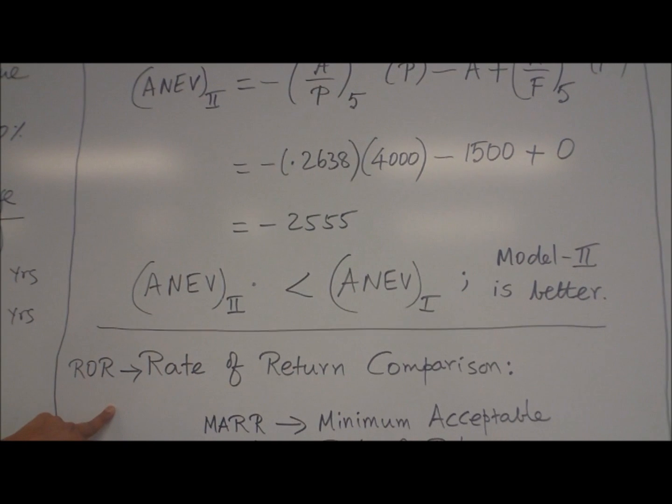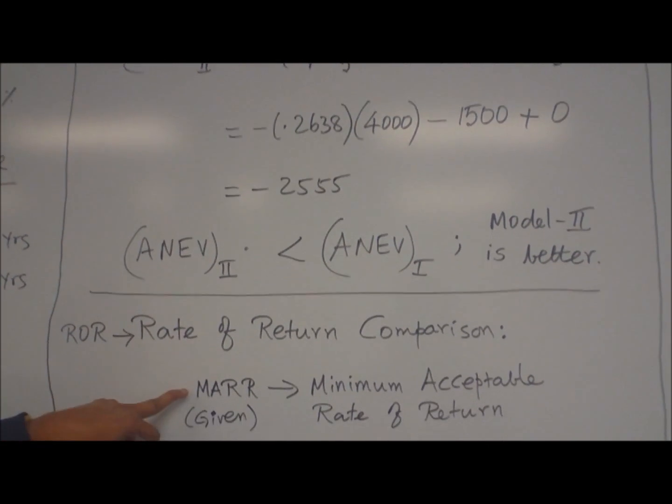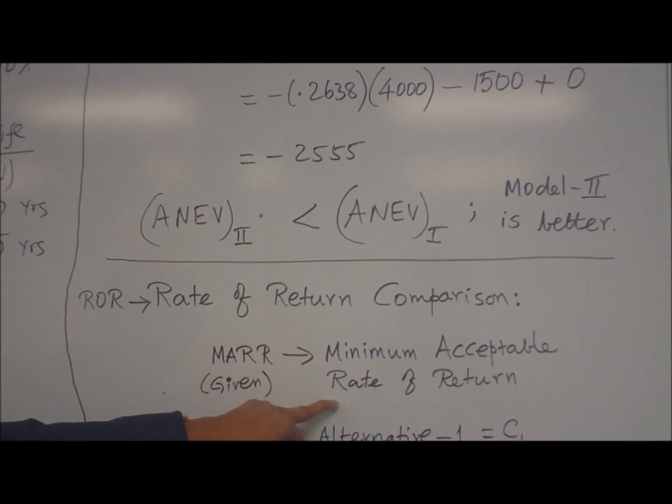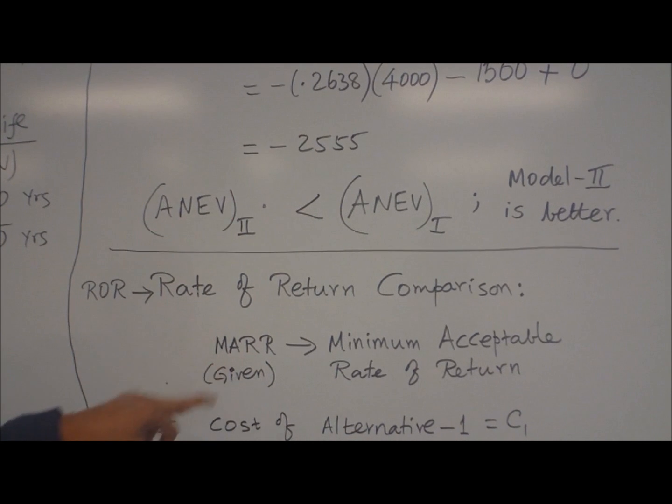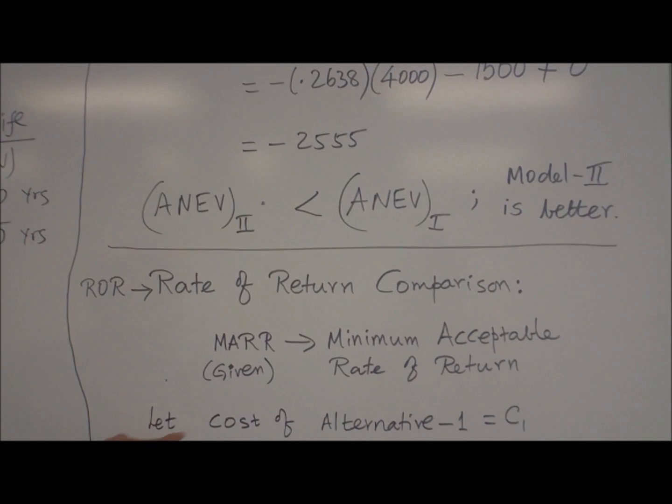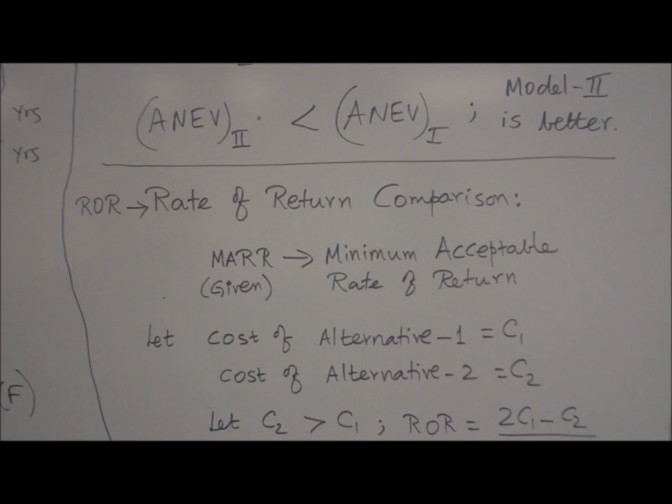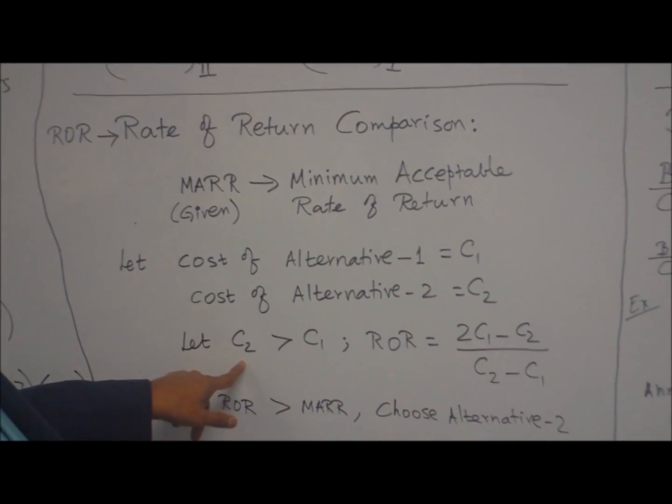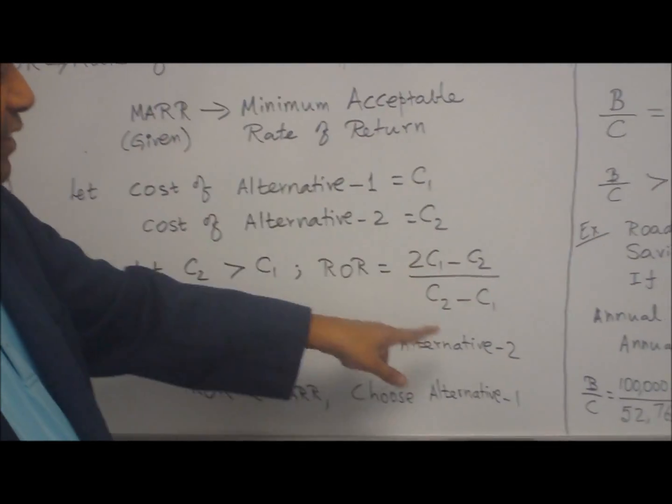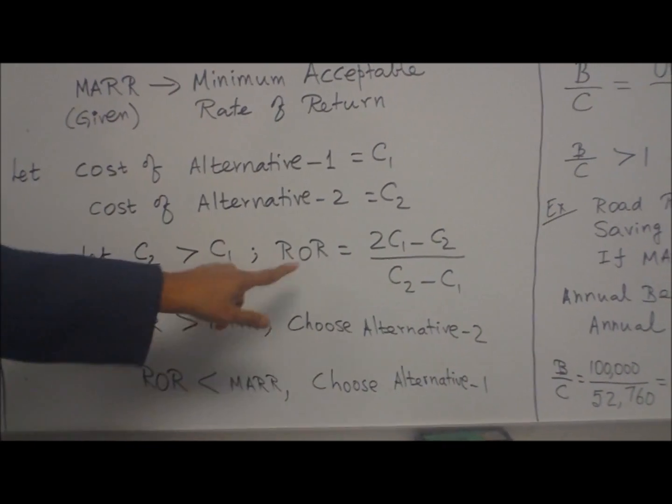The next comparison is the rate of return comparison. What is the rate of return? You compare the interest with a given minimum acceptable rate of return. MARR stands for minimum acceptable rate of return, which is given in the problem. Let us say cost of alternative 1 equals C1, cost of alternative 2 equals C2, and C2 is greater than C1. Then rate of return is given by 2*C1 minus C2 divided by C2 minus C1.